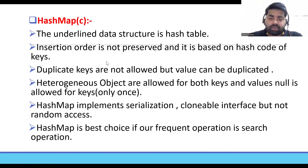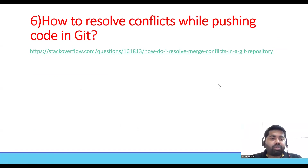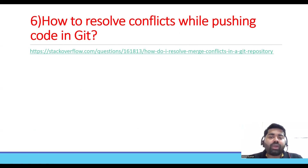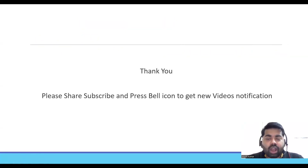How to resolve conflicts while pushing code in Git: I've shared a link in the description. Conflicts come when you try to merge code. There are many ways to resolve conflicts, so refer to that link to get a good idea of how to resolve them.